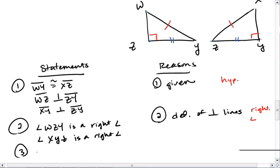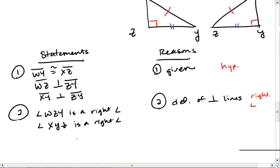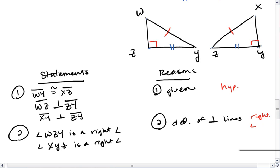Next, I know that angle WZY is congruent to angle XYZ because all right angles are congruent. However, this step isn't necessary for hypotenuse leg, so I'm actually going to erase it. The only step that is necessary angle-wise is to show that we have right angles.